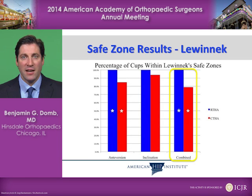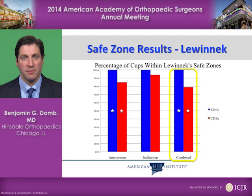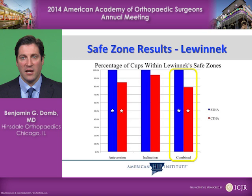The percent of cups within Lewinik's safe zone was 100% for the robotic system, as opposed to almost 80% for the freehand technique. This is the combined safe zone involving both anteversion and inclination.